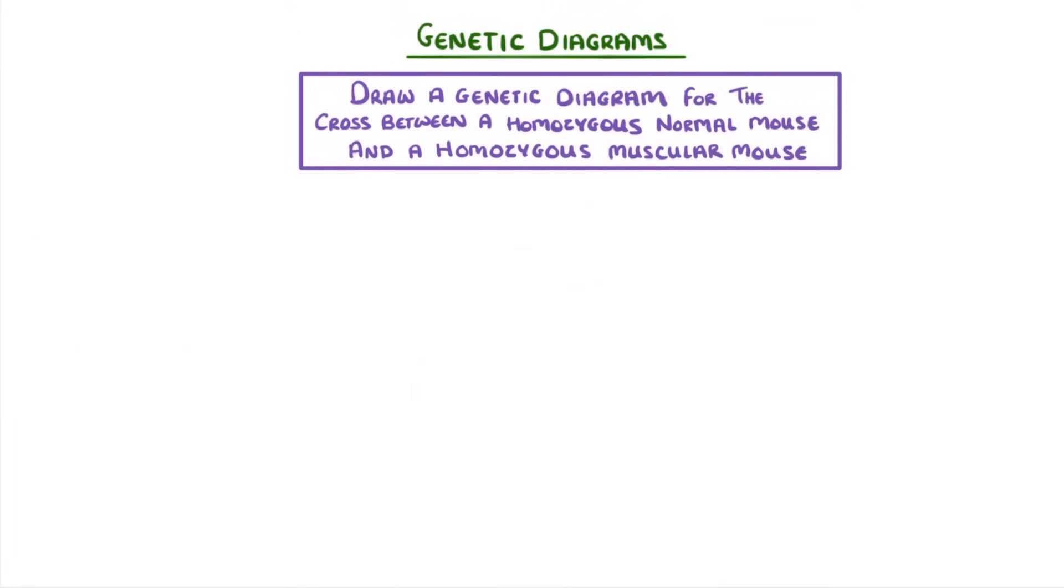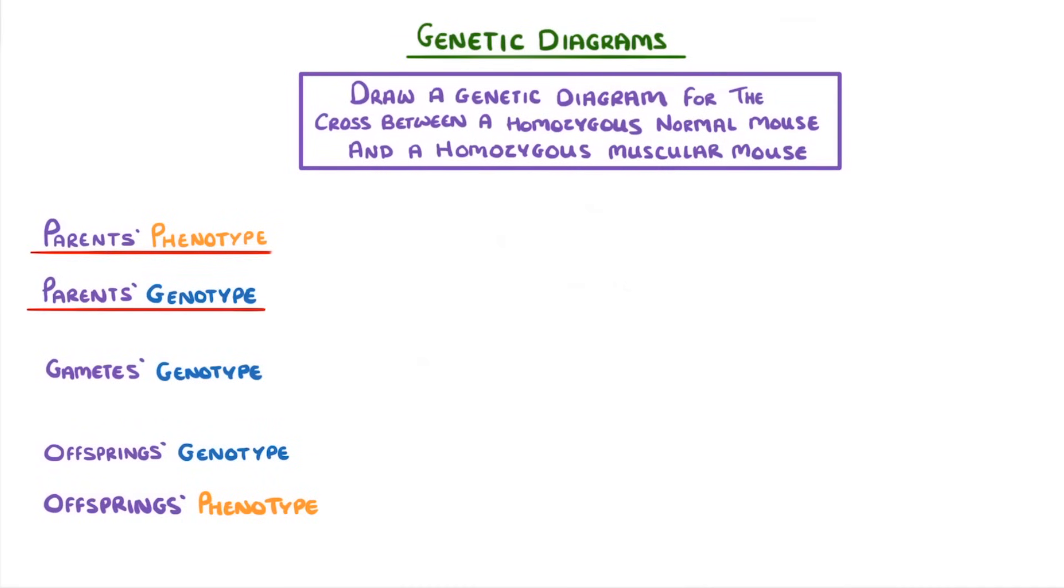Now whenever you have to draw a genetic diagram, there are five main things you need to look at and you look at each of them in turn. So first you find the parents' phenotype and genotype, which they'll often give you in the question. Then you use that to find out all of the gametes' genotypes, and then finally use those to find the offspring's genotypes and then phenotypes.